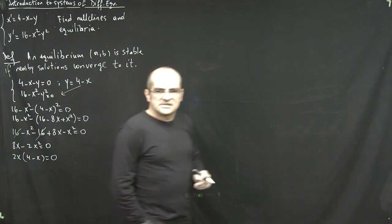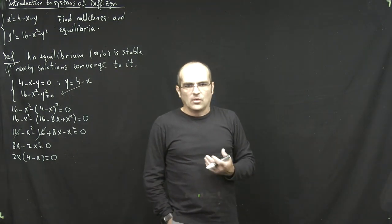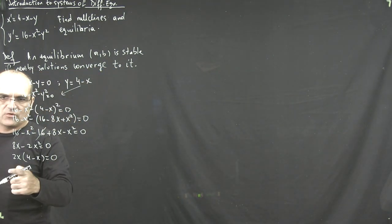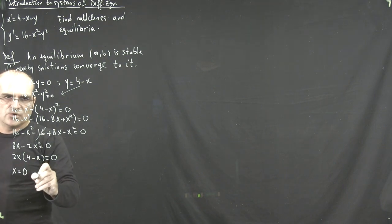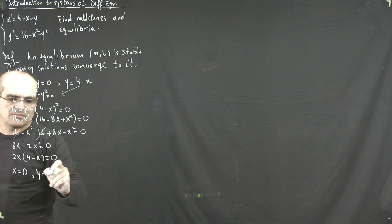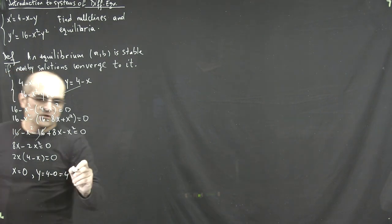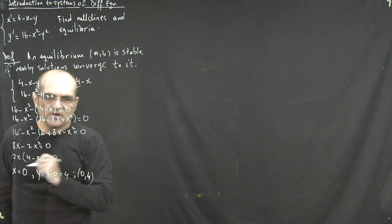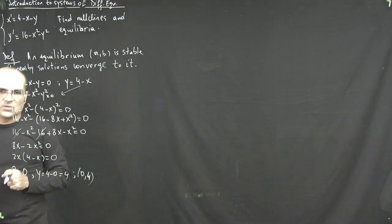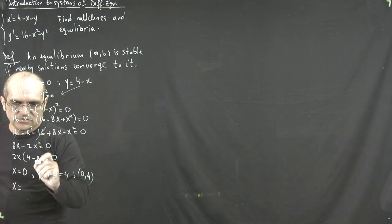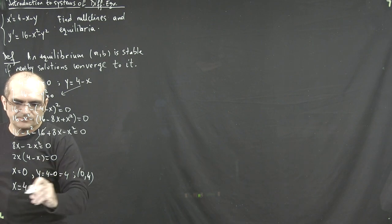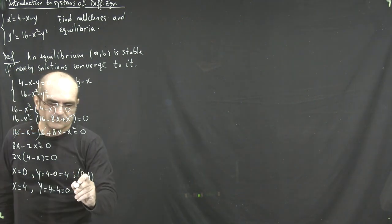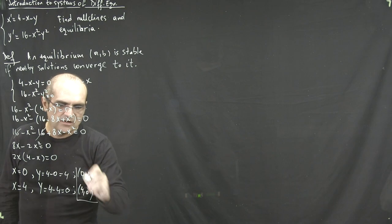We need to solve the system for all possible solutions to find all equilibrium points. This equation gives two solutions: x equals 0, which from the substitution gives y equals 4, so (0, 4) is one equilibrium point. Or x equals 4, giving y equals 0, so (4, 0) is the other equilibrium point. Always write these as ordered pairs with x and y coordinates.